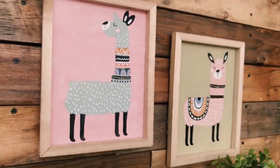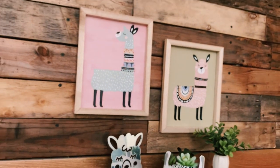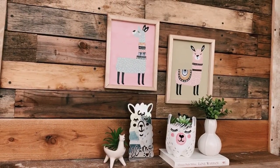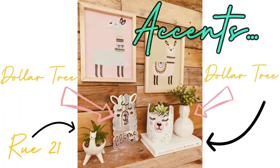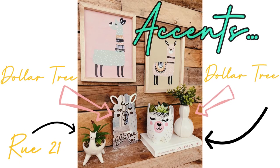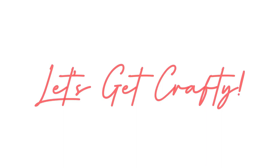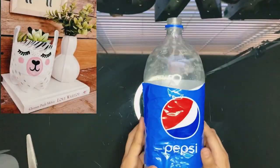I wanted to share with you real quick where I purchased the accents on this display. The white book, the small white vase, and the adorable llama mirror were all purchased at Dollar Tree, and this little llama planter I found at Rue 21 for about three dollars. Okay, let's jump right in and let's get crafty.